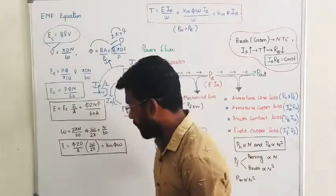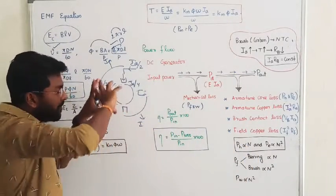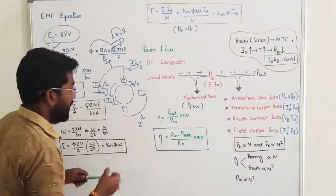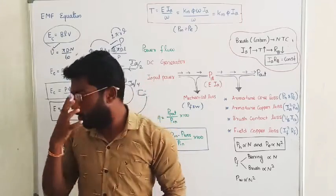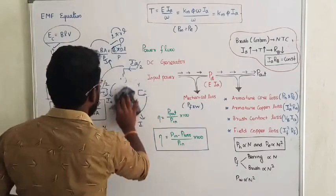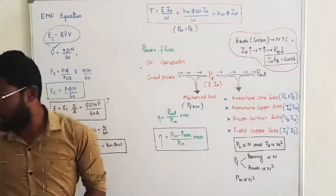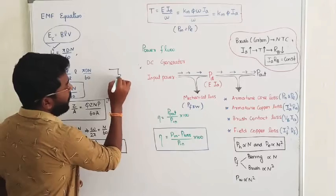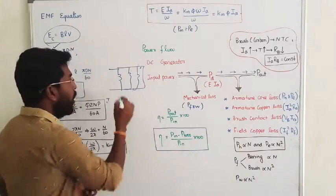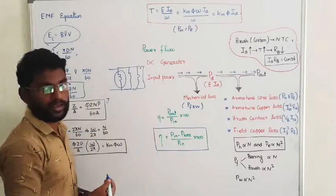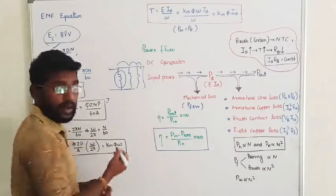Since all these paths are connected in parallel, the induced EMF remains the same in a parallel circuit. For example, if the armature has 4 lines in parallel, the induced EMF in all 4 parallel paths will be equal.